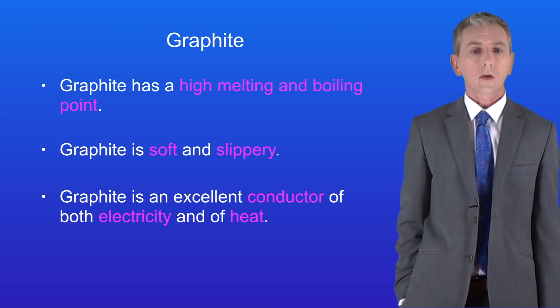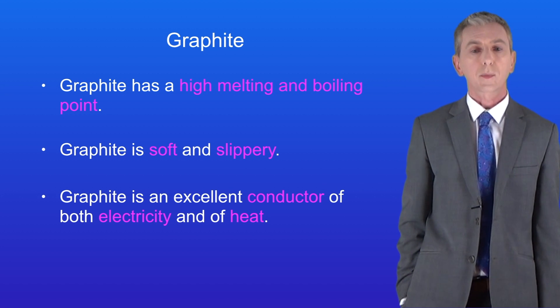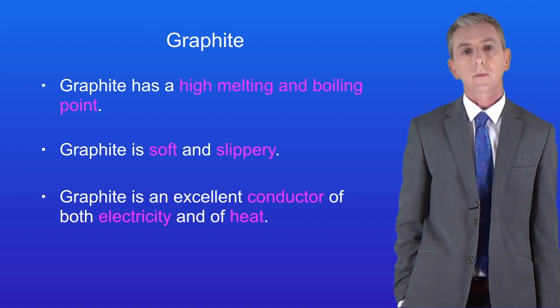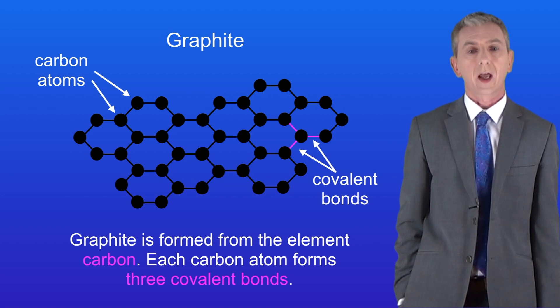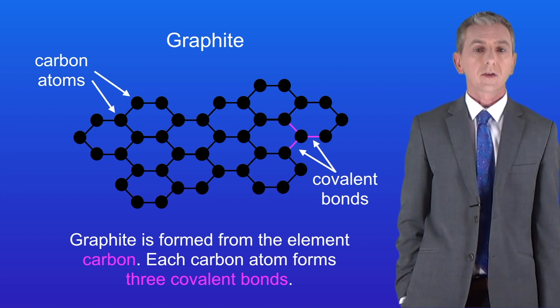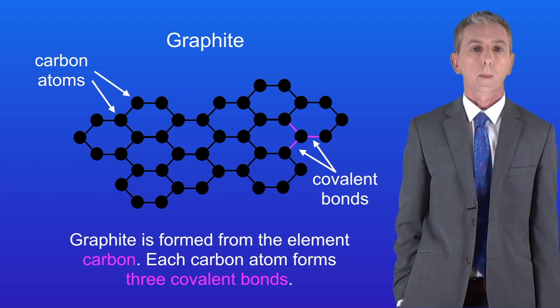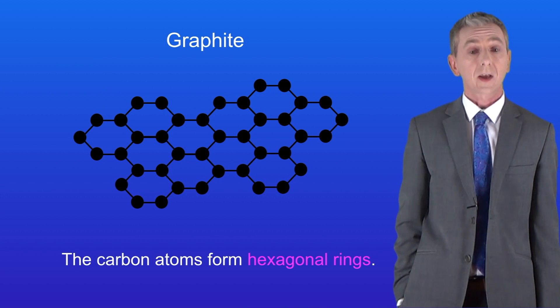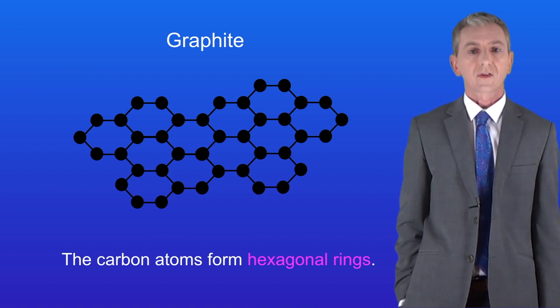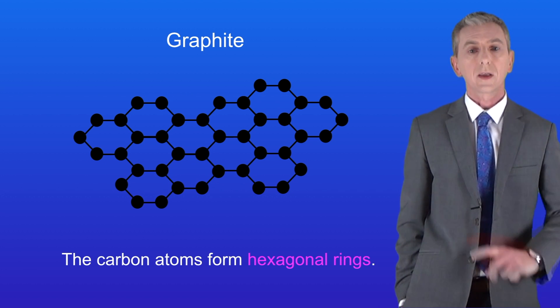So let's take a look at the structure of graphite and try to explain these properties. As I said graphite is formed from the element carbon. However in the case of graphite each carbon atom forms three covalent bonds. The carbon atoms form hexagonal rings. In other words rings of six carbon atoms and I'm showing you these here.